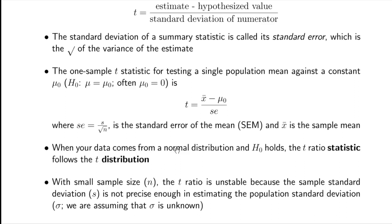When your data comes from a normal distribution and the null hypothesis is true, the t-ratio statistic follows the t-distribution. It's a bit confusing because the symbol t is used for both the statistic and the distribution, but when talking about the distribution we usually have subscripts on the lowercase t. The reason we use a t-distribution instead of a normal distribution is that we're estimating the standard deviation and don't know it as a constant.